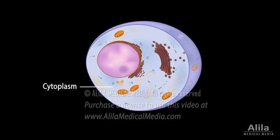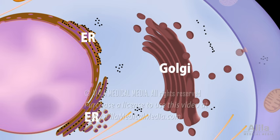The cytoplasm includes a gel-like liquid called cytosol, various organelles, and the cytoskeleton. The endoplasmic reticulum (ER), Golgi apparatus, and vesicles constitute the intracellular membrane system.